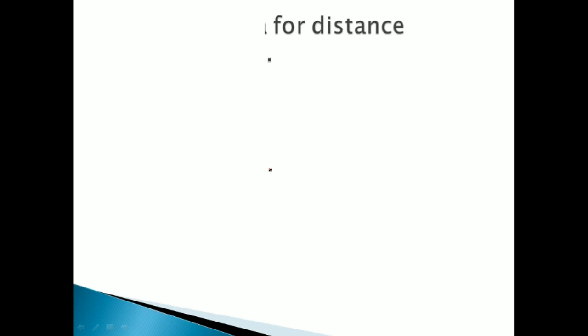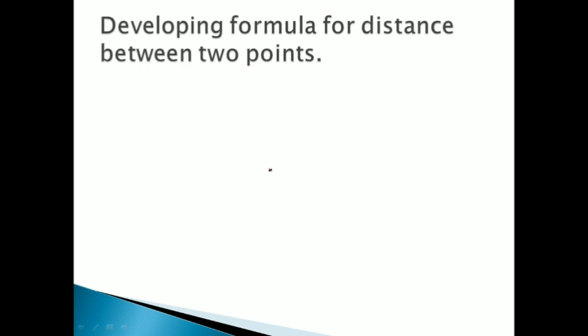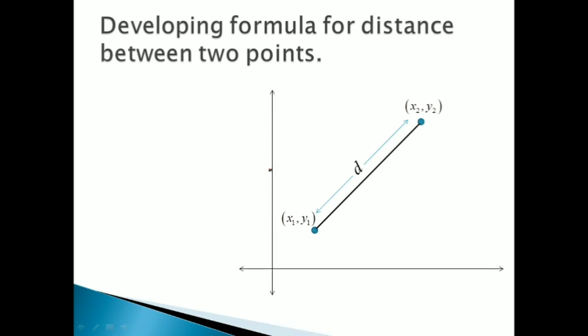Let us try to develop a formula for distance between two points। Let us say हमारे दो points हैं — एक का coordinate X2, Y2 है और दूसरे का X1, Y1 — and we have to find distance D between them। इन दोनों points को join कर देते हैं। यहाँ पे coordinates हैं तो horizontal और vertical axis भी होनी चाहिए। Construct a horizontal line from (X1, Y1) towards (X2, Y2), और construct a vertical line from (X2, Y2) नीचे की तरफ।